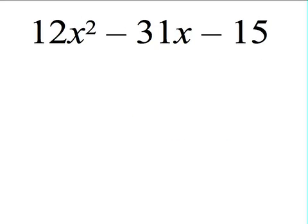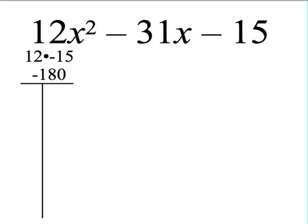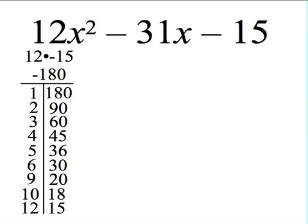Let's try another. We have 12x squared minus 31x minus 15. This time it's 12 and negative 15 to make negative 180. We'll just take all of those pairs that we wrote in the previous problem and write them again. But here's the difference. It's a negative times a positive.